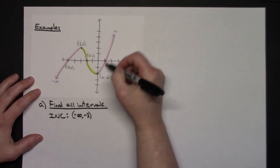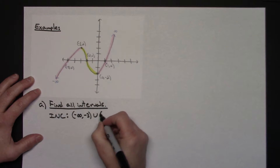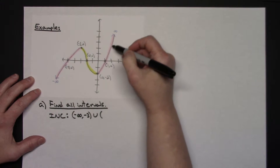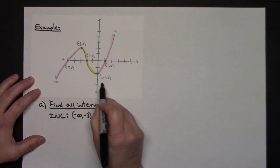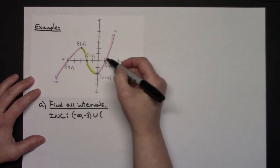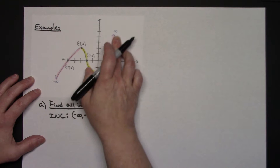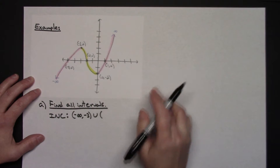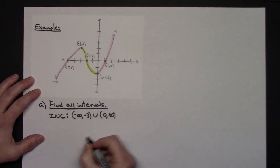Now I have another increasing section, so I'm going to do union, with curvy brackets. Looking at this section, it starts at the x value of 0 and goes to positive infinity — the graph is going up and to the right forever. So from 0 to infinity. That gives us our increasing intervals: negative infinity to negative 3, union, 0 to infinity.